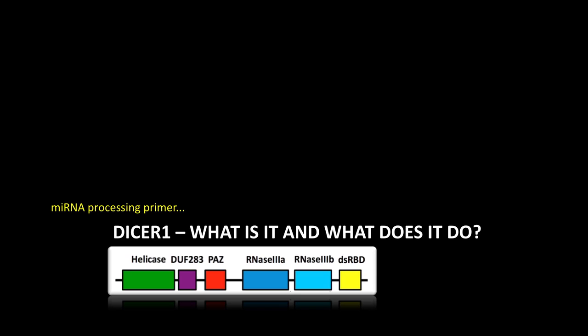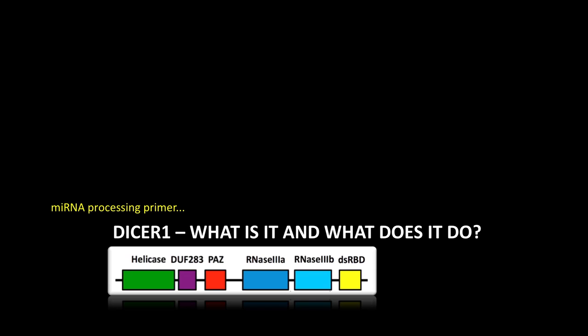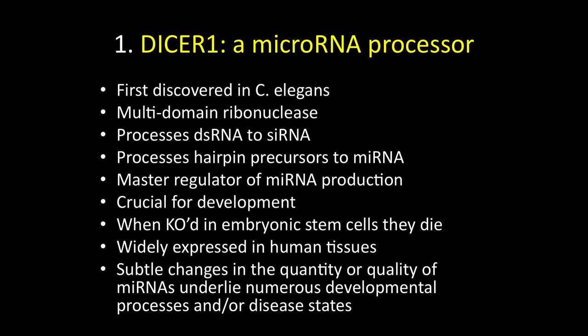DISA was first discovered in the worm C. elegans. For the purposes of this talk, you can regard it as a processor of microRNA precursors. It takes a precursor to a mature microRNA, which then acts as a regulator of mRNA. It's very important for development, and knockout of DISA seems to be lethal at the embryonic stem cell stage.